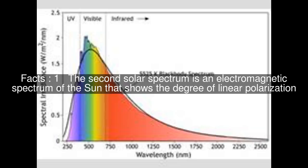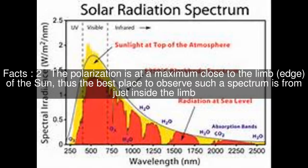The second solar spectrum is an electromagnetic spectrum of the Sun that shows the degree of linear polarization. The polarization is at a maximum close to the limb of the Sun, thus the best place to observe such a spectrum is from just inside the limb.